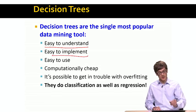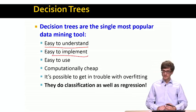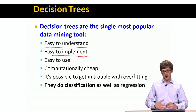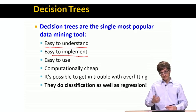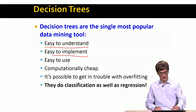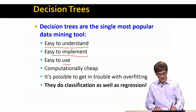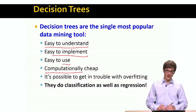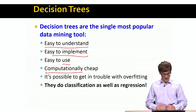Decision trees are also very easy to implement. Both the training stage is not that complicated, and once we have the tree, it's very easy to use it for classification. Trees are also easy to use. Another important thing is that they are computationally very cheap, in the sense that classification is easy.